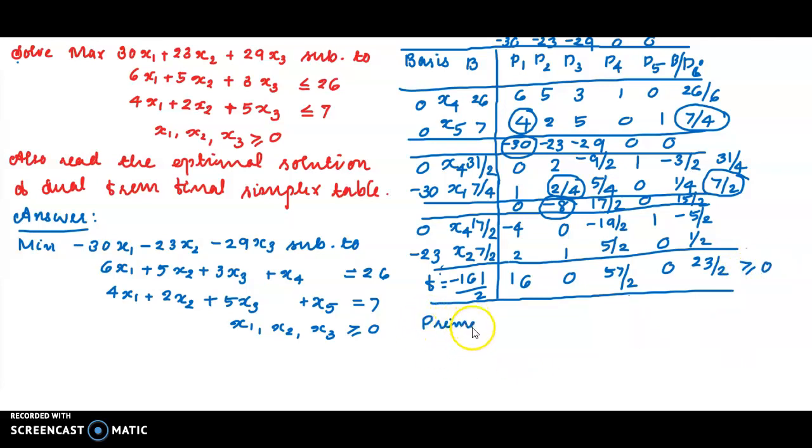Maximum value is the opposite. Maximum of 30x₁ plus 23x₂ plus 29x₃. It is opposite sign 161 divided by 2. Variable values in the matter. x₁ equal to 0, x₂ equal to 7 by 2. This is the solution of the primal.